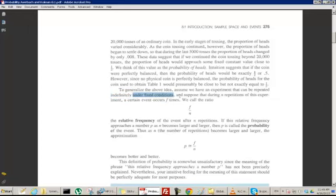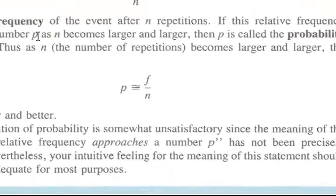Suppose that during n repetitions of this experiment, a certain event occurs f times. For example, heads occurs f times. We call the ratio f over n the relative frequency of the event after n repetitions. If this relative frequency approaches a number p, so in the above example it approached 0.5 maybe, as n becomes larger and larger, then p is called the probability of the event.